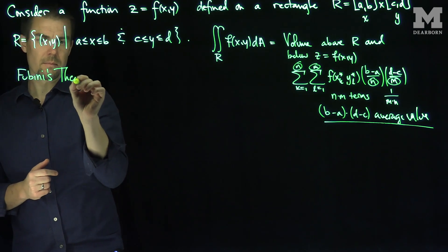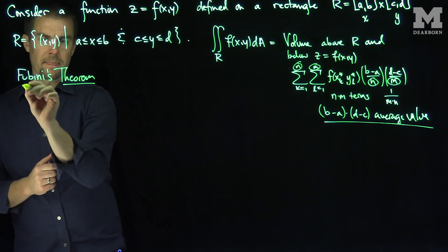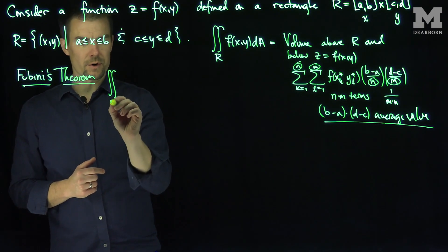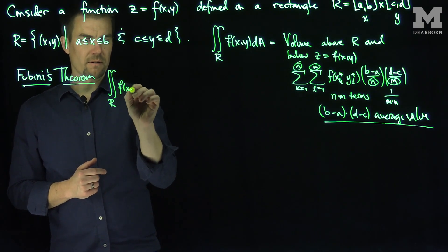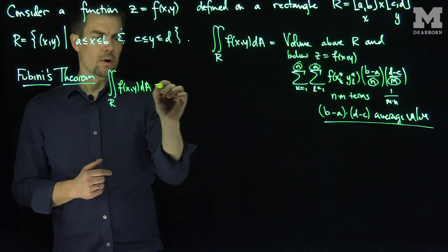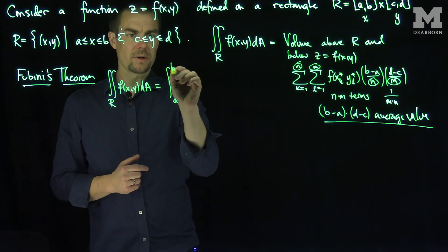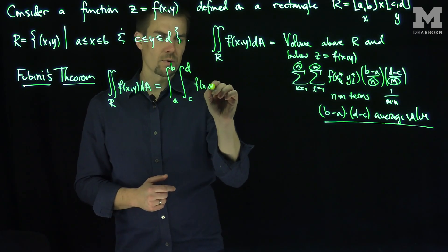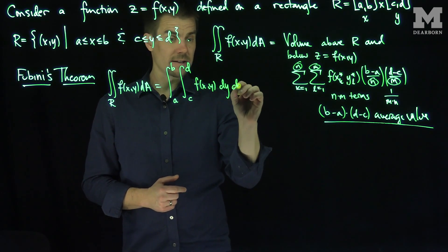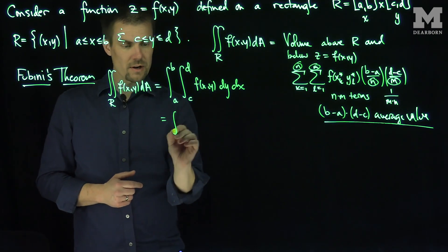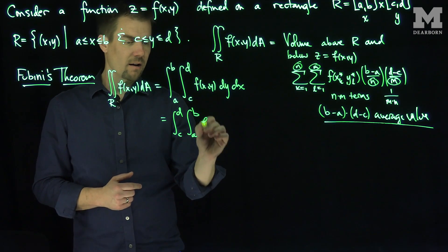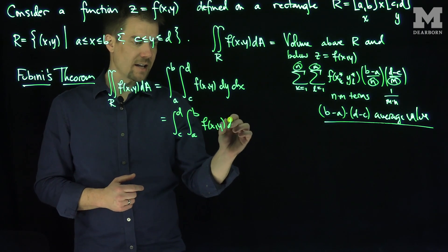So what Fubini's theorem says is the following. This is Fubini's Theorem. What Fubini's theorem states, it says that if you want to do the double integral over your rectangle R of f of x, y dA, you can do this one of two ways. You can integrate from a to b, integrate from c to d, f of x, y dy dx, or you can integrate from c to d, integrate from a to b of f of x, y dx dy.